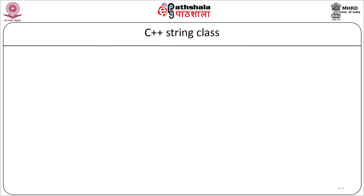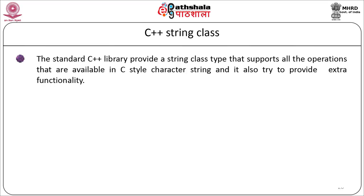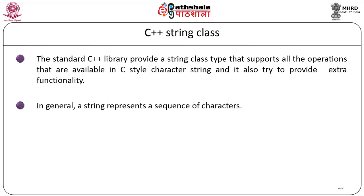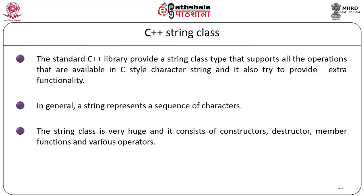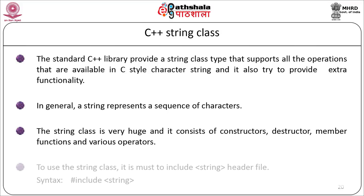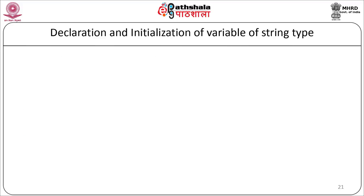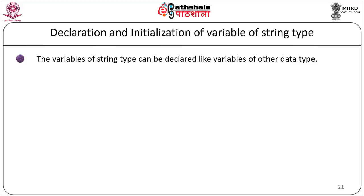The standard C++ library provides a string class type that supports all operations available in C and also provides extra functions. A string represents a sequence of characters. The string class consists of constructors, destructors, member functions, and various operators. To use the string class, the header file string must be included: #include <string>. Variables of string type can be declared like any other data type — for example, string str1, where str1 is an object of class string.